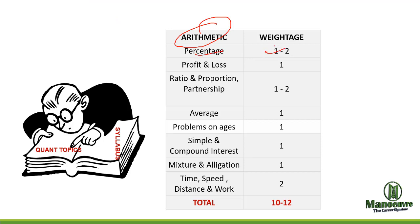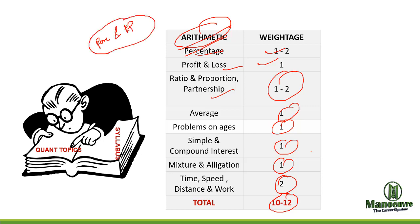Let's see arithmetic in detail. Percentage 1-2 questions, profit and loss 1 question, ratio proportion and partnership 1-2 questions, average 1 question, problems on ages 1 question, simple and compound interest 1 question, mixture and allegation 1 question, time speed distance and work 2 questions. Overall 10-12 questions you can expect from arithmetic in CET exam. In arithmetic you have to prepare two topics very well: one is percentage and second is ratio proportion.